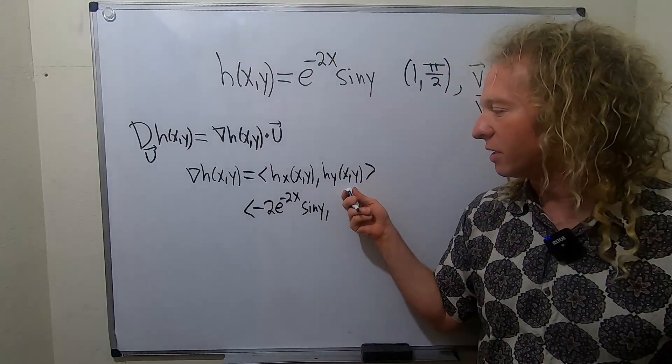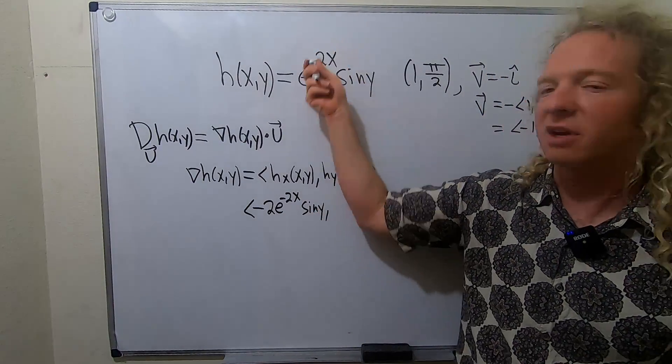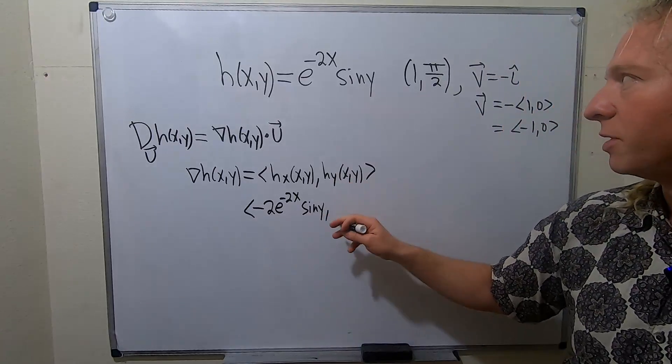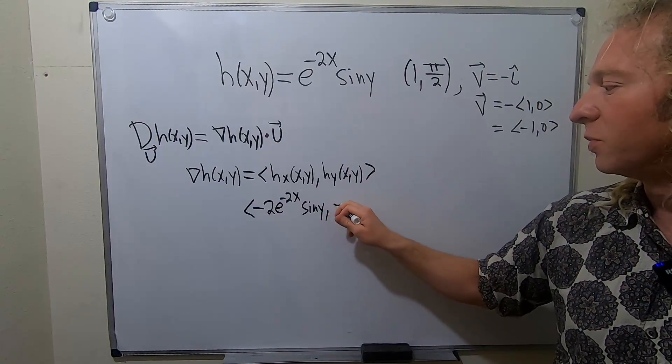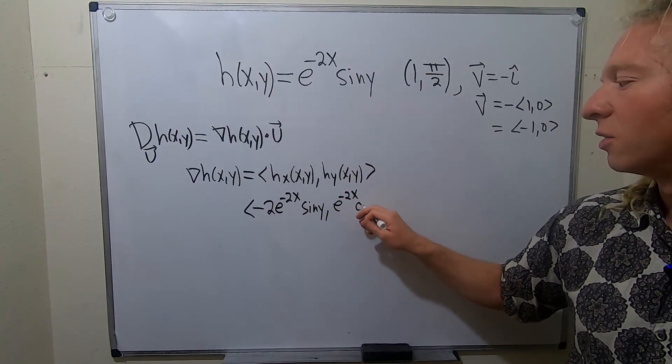And then here, when we take this partial, this is a constant. The x's are constants. So this is going to be, well, the derivative of sine is cosine. So we get e to the negative 2x cosine y.